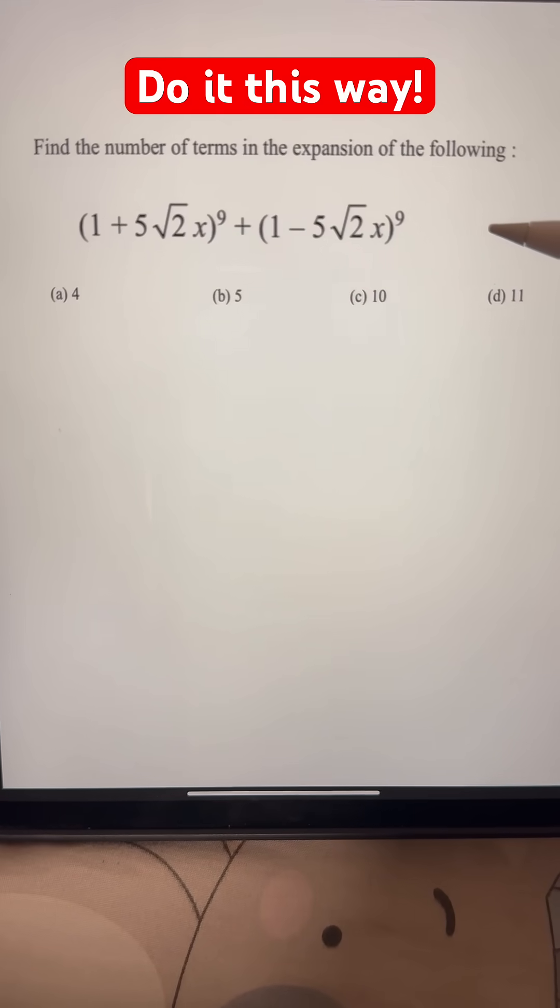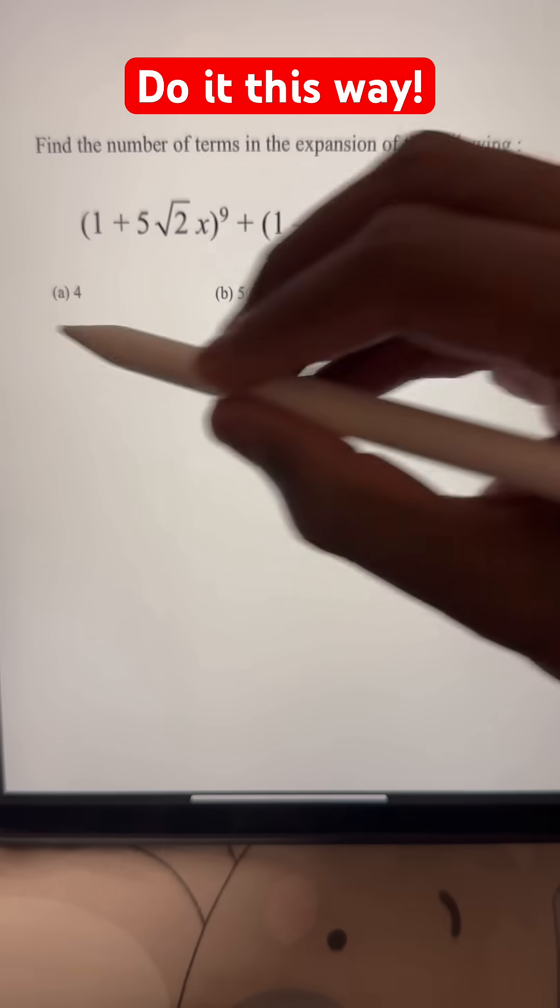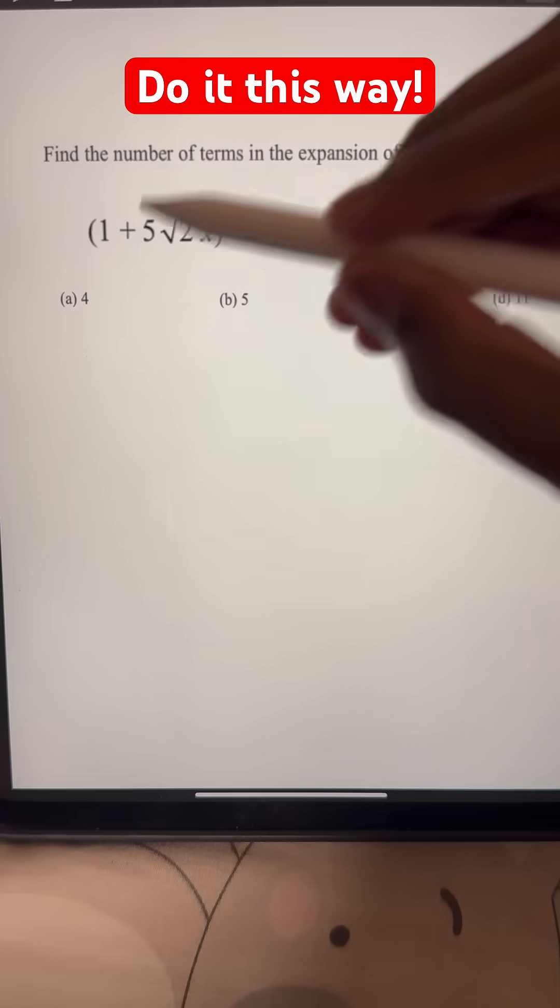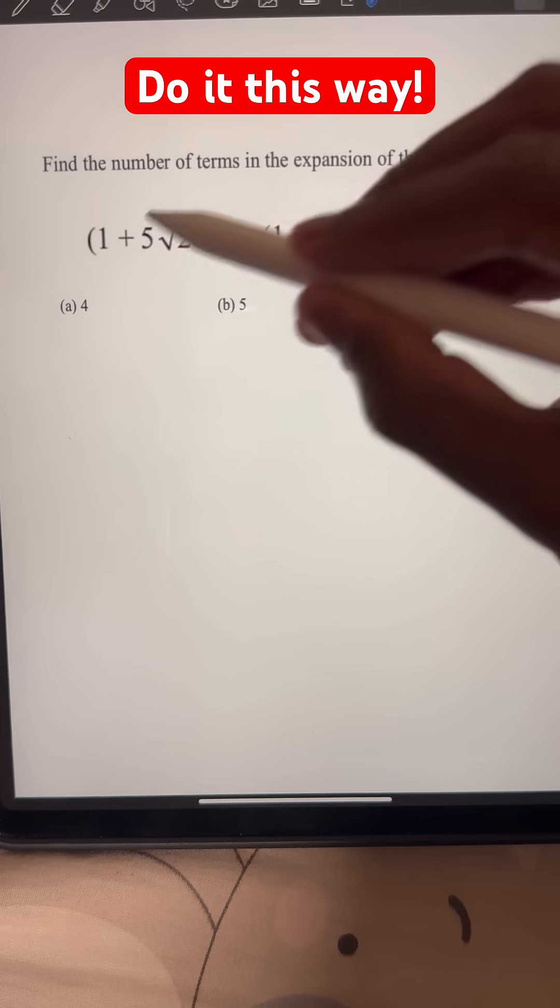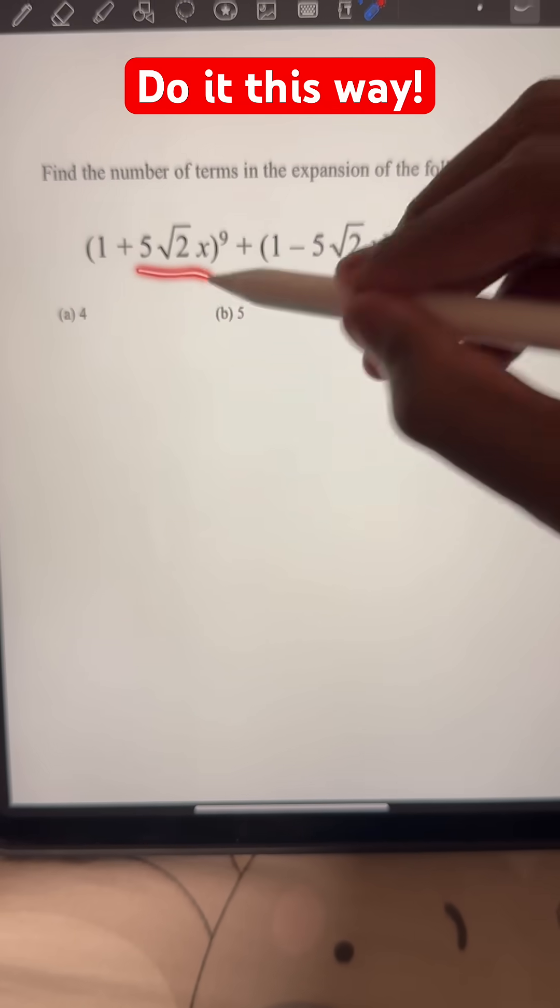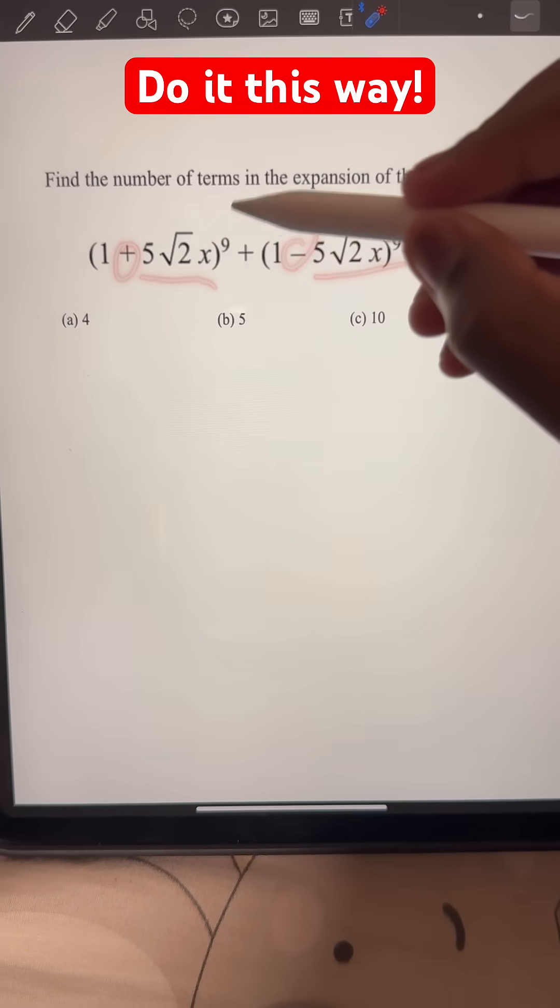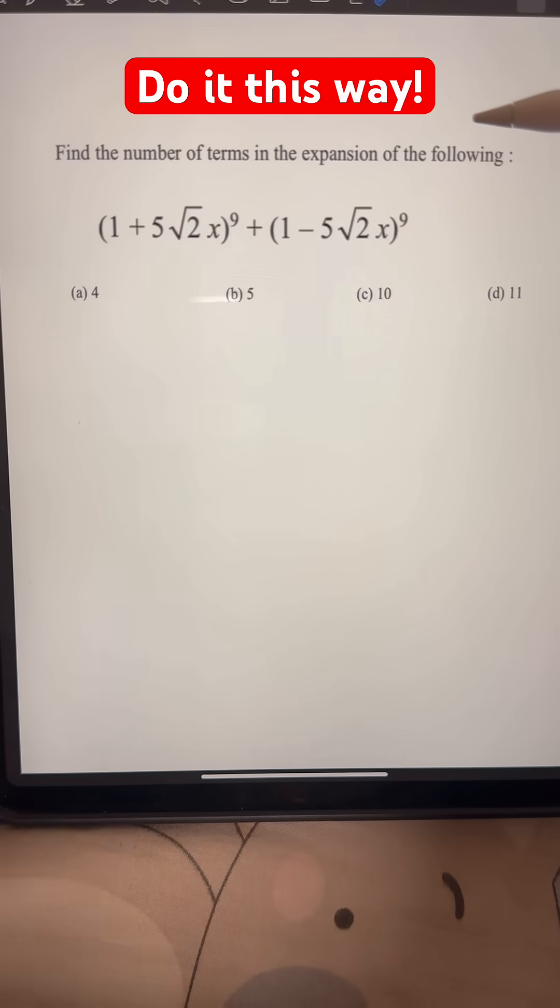Find the number of terms in the expansion of the following. We have four options given. We can see that the terms inside the two binomial expressions are the same - we have 1 and 5√2x. Only the sign is different. The exponents for the binomials are also the same.